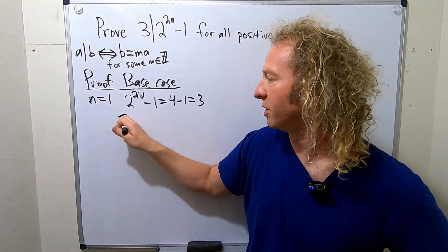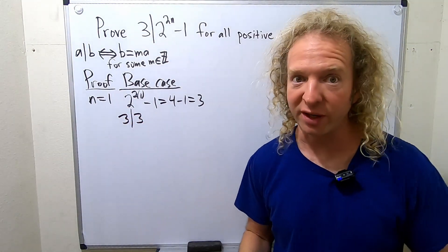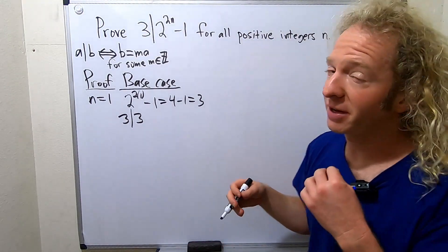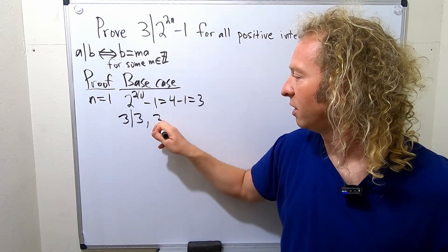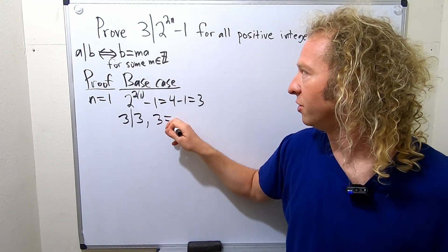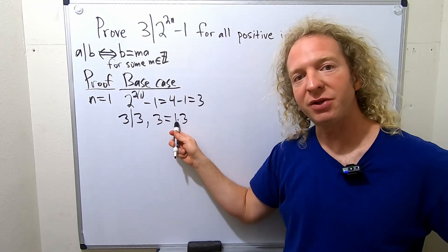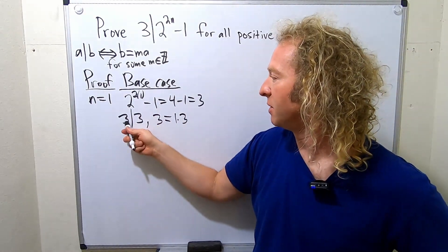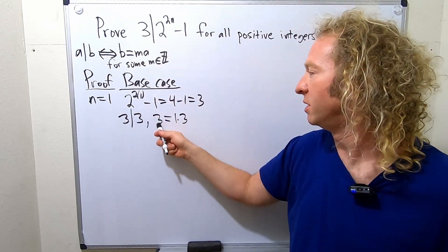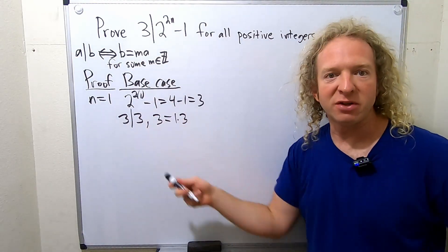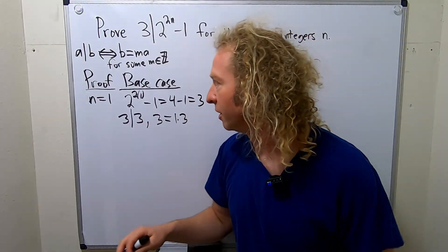So the statement is that 3 divides 3. And that's certainly true — obviously. If that's not clear, you can use the definition: 3 is equal to 1 times 3, so your M is 1, your A is 3, your B is 3. So that means 3 divides 3. The base case is proven.